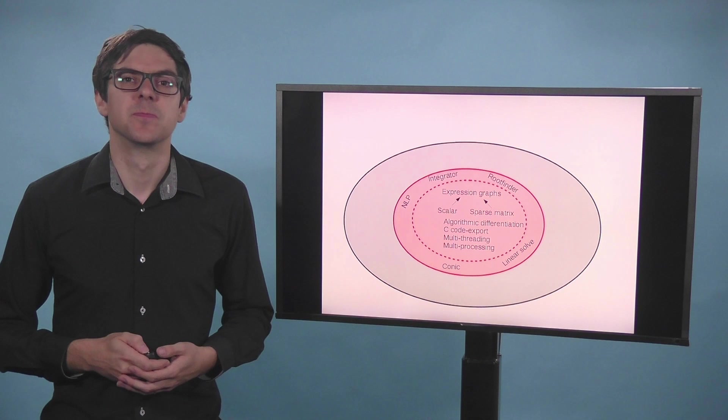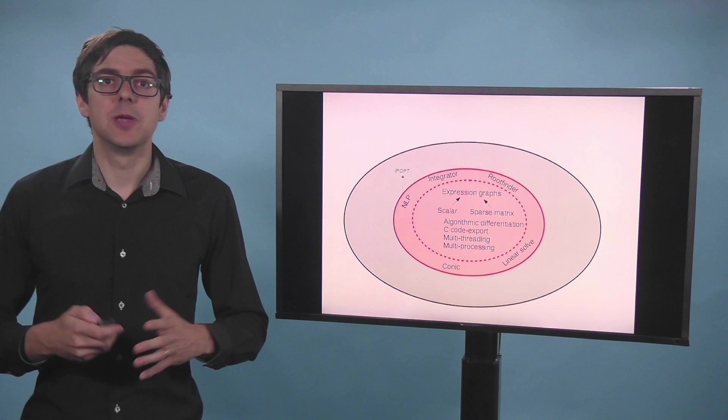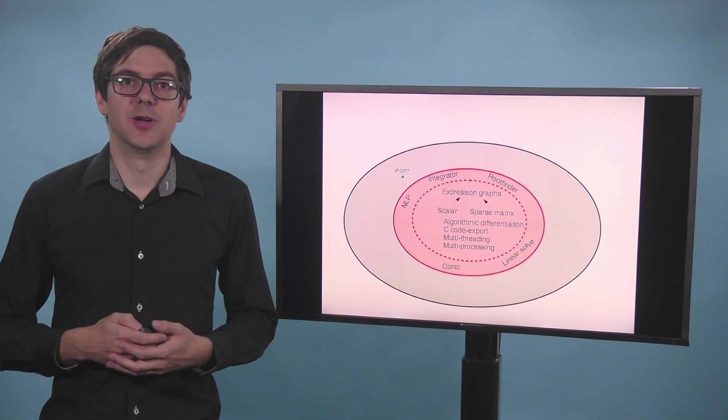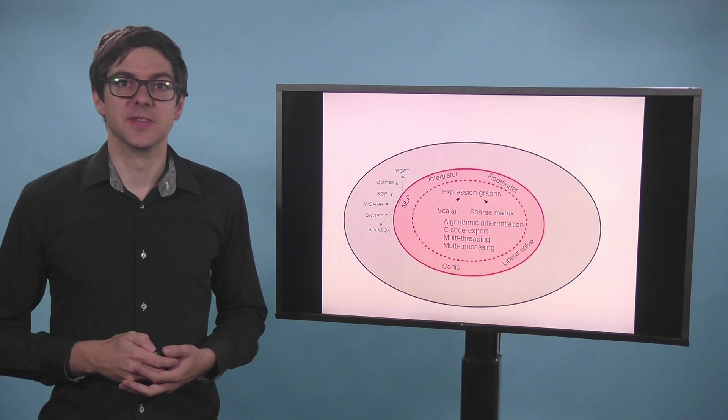And now we have on the outer edge third party packages that we interface. These are the plugins. So the first is the IPopt plugin. So IPopt is very well at solving large scale nonlinear programming. We have also interface to the Bonmin package. So you could do mixed integer problems. And there are several others, SQP type methods and so on.